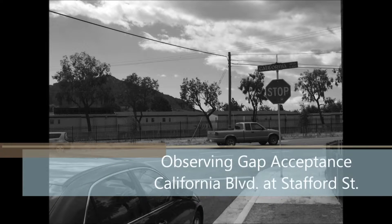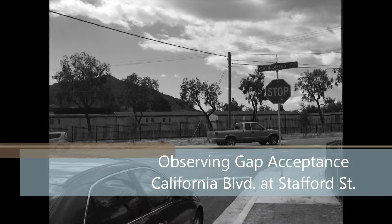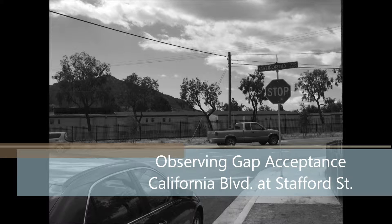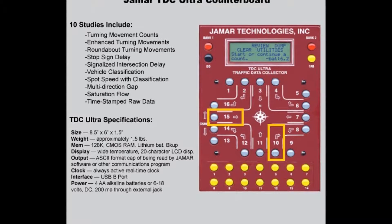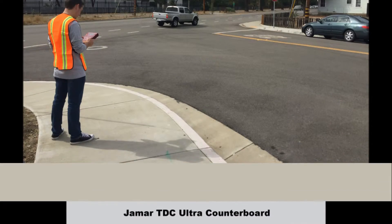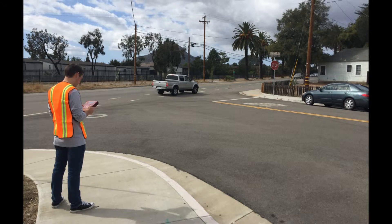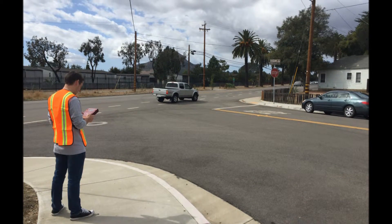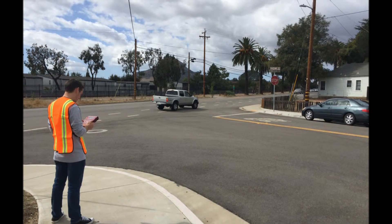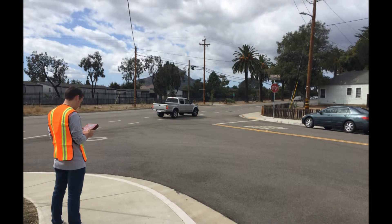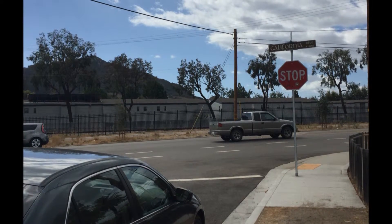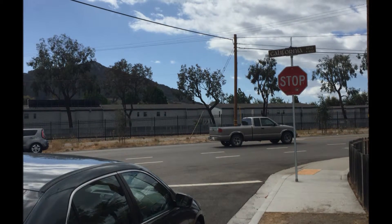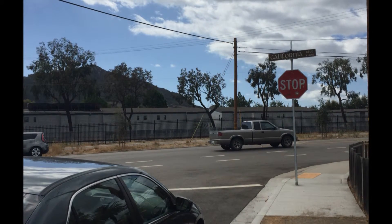The purpose of the study is to observe the gap acceptance behaviors for right-turning vehicles using the Jammer TDC Ultra data collector, as drivers look for the opportunity to depart from the stop bar. In this study, you only need one analyst to complete it. In this example, we will use a one-way stop-controlled intersection. The analyst will use the TDC Ultra to make timestamps of passing vehicles on the major street as the front bumper crosses the point of interest.